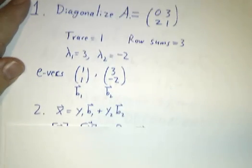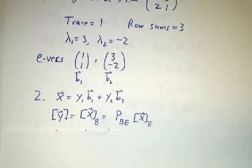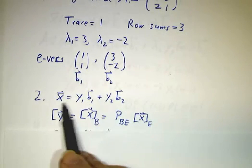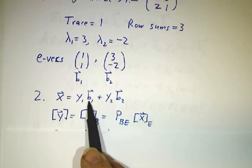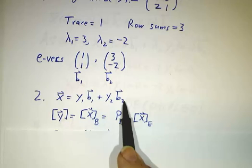So, okay, now we got our new coordinates. Y is the coordinates of x in the B basis, which is to say, we write x as y1 times the first basis vector plus y2 times the second basis vector.